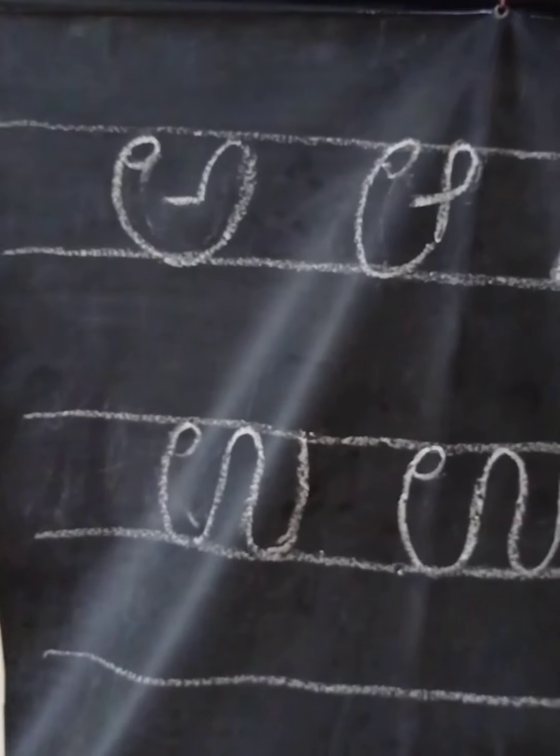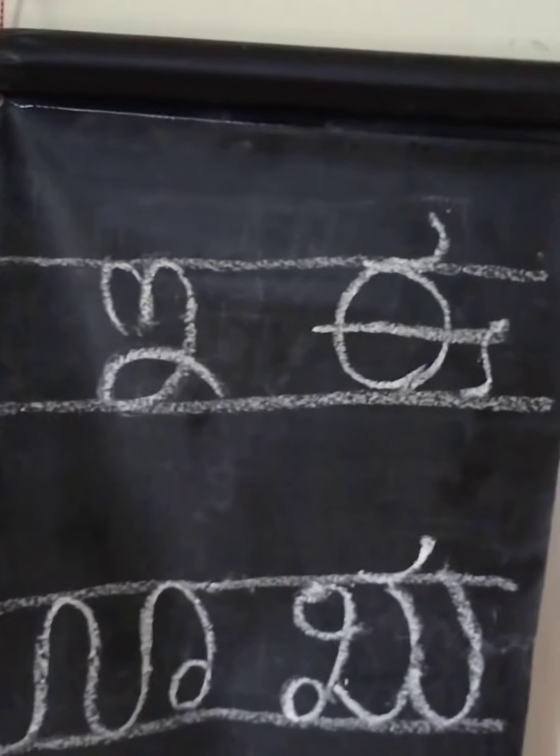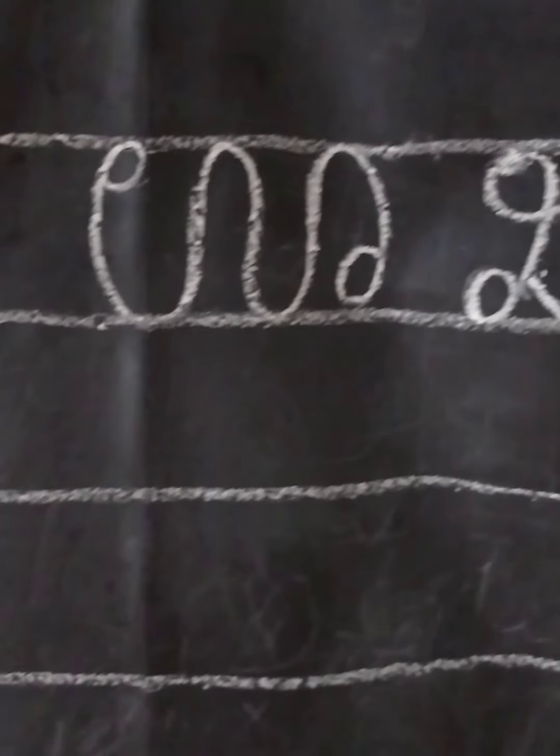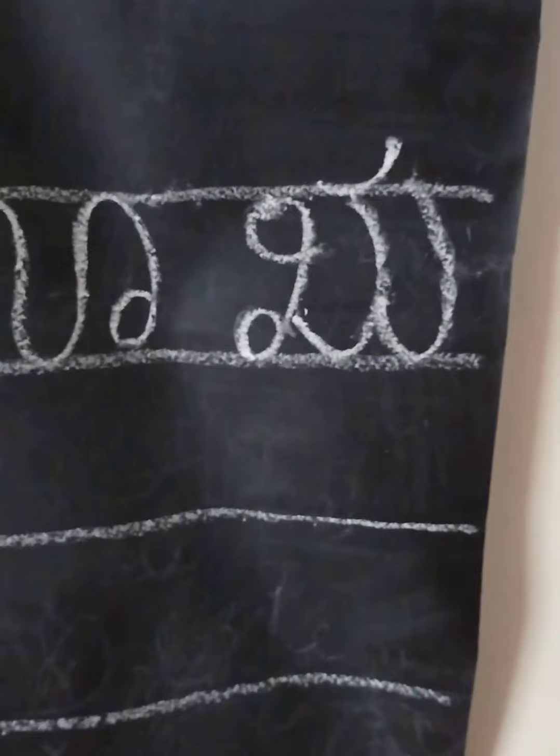These are the first seven alphabets. A, Ā, E, E, U, Ū, and Ru. Ru as in Rutu.